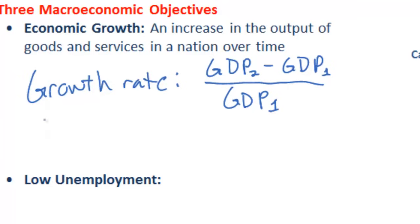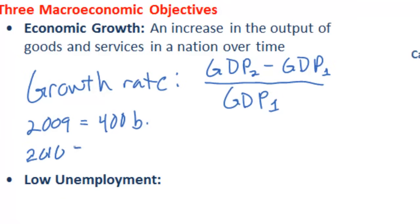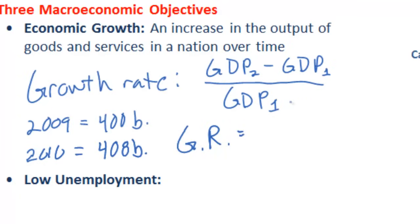Let's use an example. Let's assume that in 2009, Switzerland's GDP equaled 400 billion dollars, but in 2010, Switzerland's GDP equaled 408 billion dollars. Clearly there was economic growth between 2009 and 2010. To determine the growth rate - we'll call it GR - all we must do is find the percentage change in GDP between these two years.